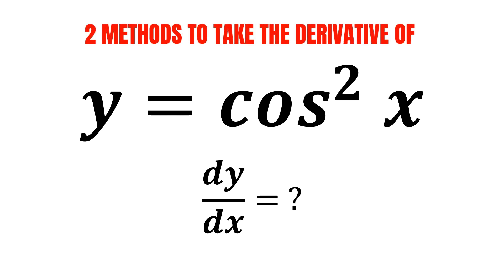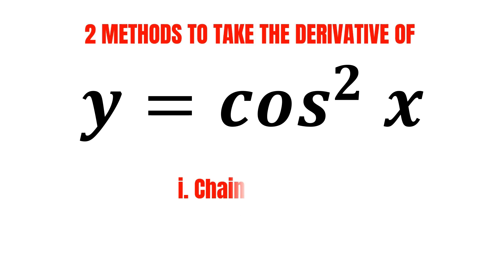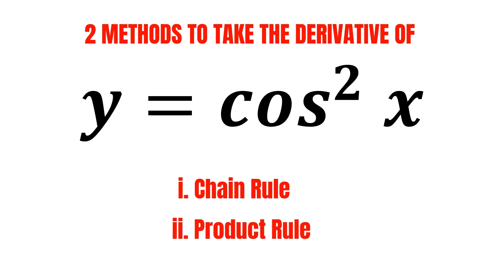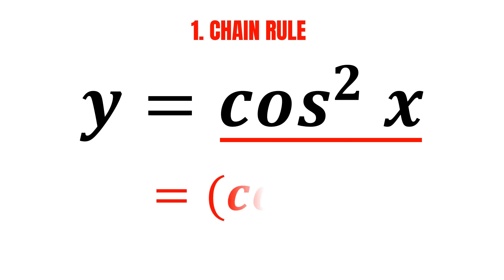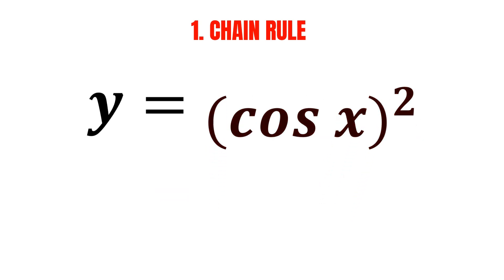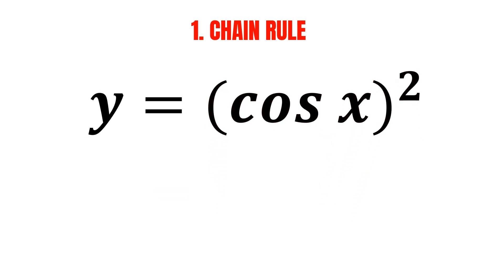There are two main ways to find the derivative of cosine squared of x, which are by using the chain rule and the product rule. Let's begin by using the chain rule. Cosine squared of x can actually be written as cosine of x, squared, which is a composite function, so we can apply the chain rule to find its derivative.